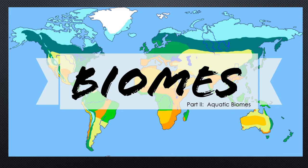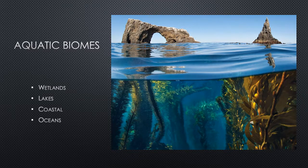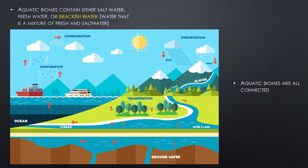Today we are going to do the second part of our biomes, looking at aquatic biomes, and then go over conservation. Starting with aquatic biomes, we have four different types: wetlands, lakes, the coastal regions, and the oceans themselves. Aquatic biomes can contain either salt water,